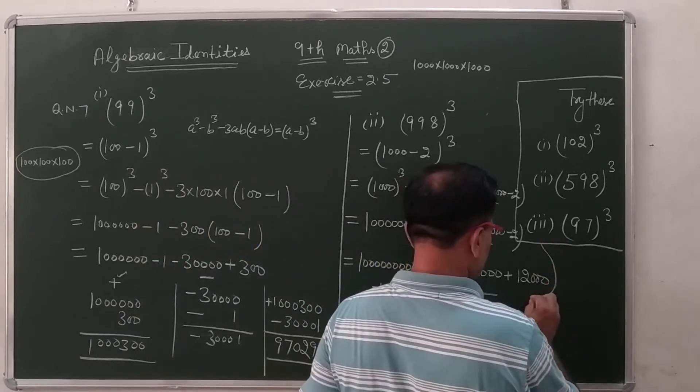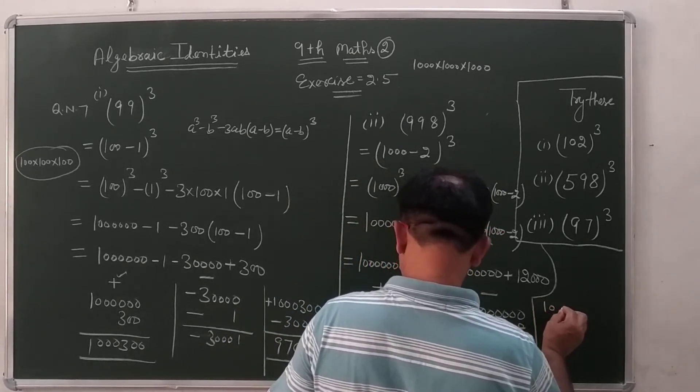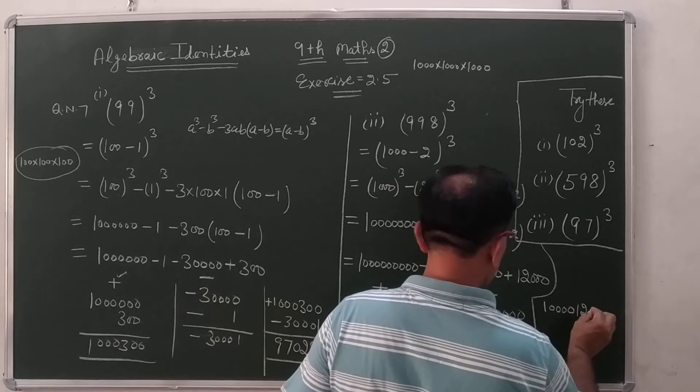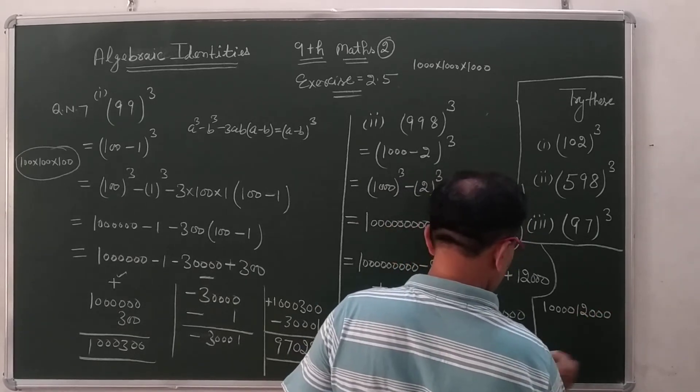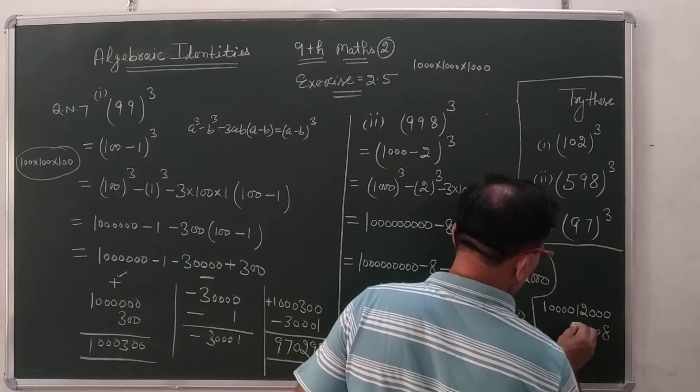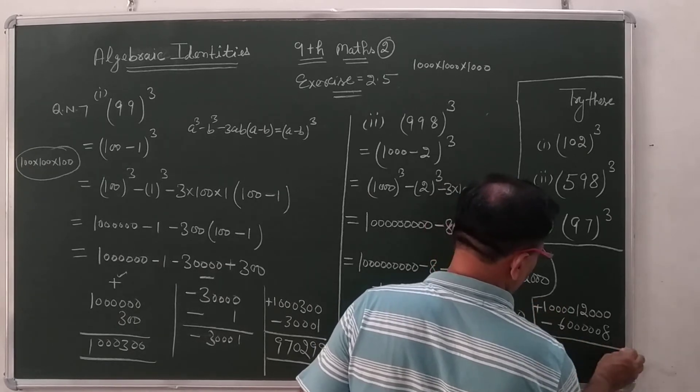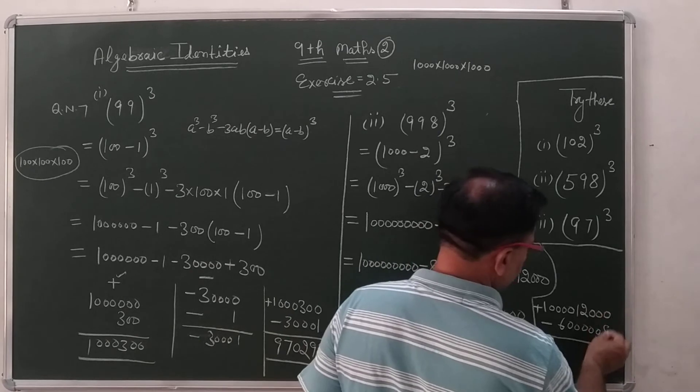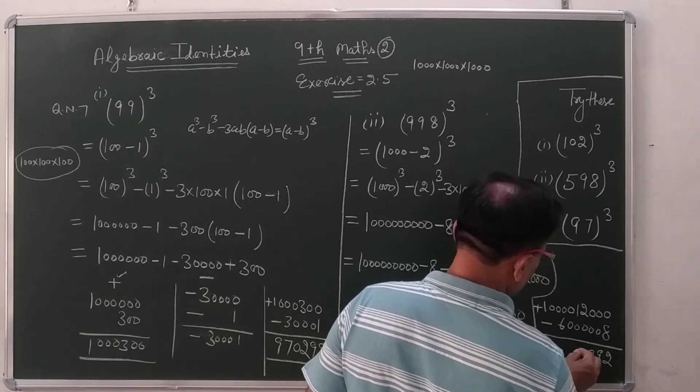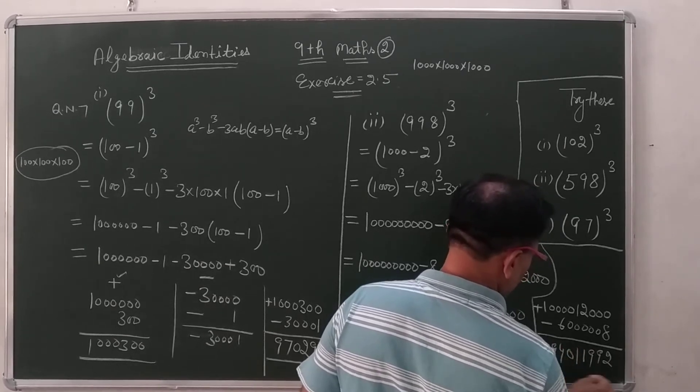Ab isko actual solve karenge. Dekhe. Amar paas plus ka ye hai 1, 0, 0, 0, 0, 1, 2, 3, 0. Or minus ka ye likhenge 8, 1, 2, 3, 4, 5. Ye digit ke niche digit jahan lakna. Ten me se it gaya. Two. Nine. Nine. One.